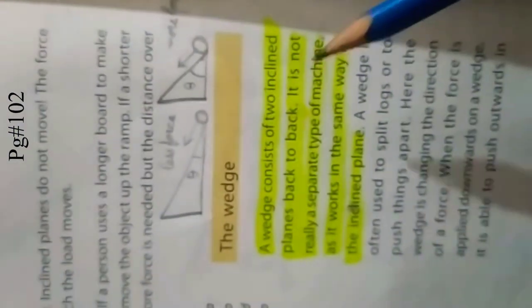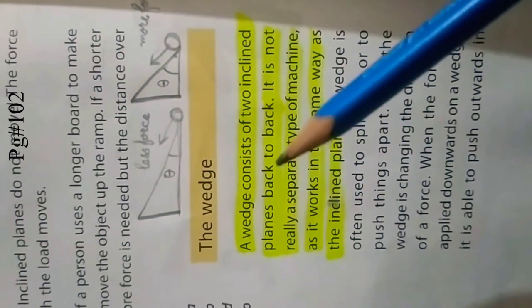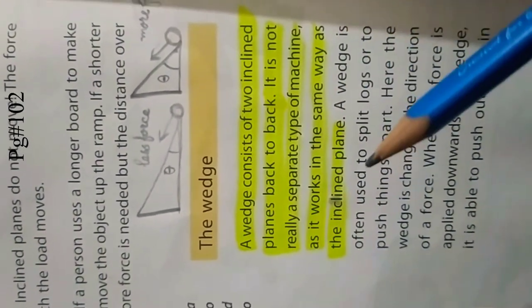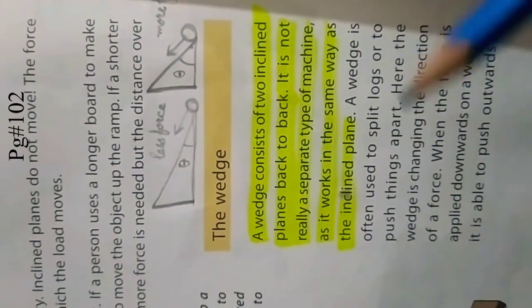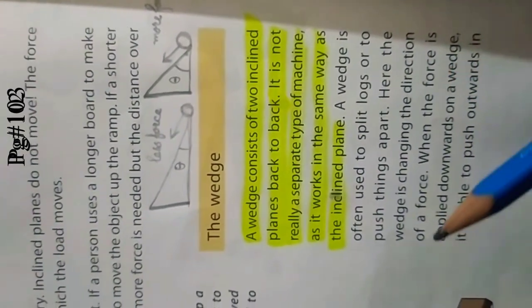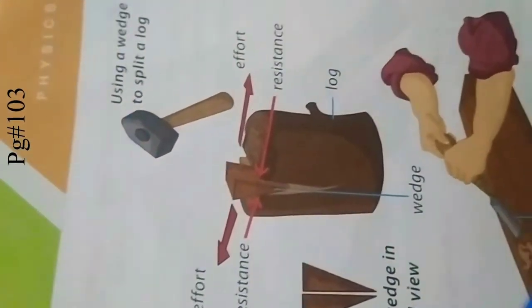This all has been told in this paragraph I have explained. Now we'll move to another simple machine that is wedge. A wedge consists of two inclined planes back-to-back. It works in the same way as inclined plane works. A wedge is often used to split locks or to push things apart. Here the wedge is changing the direction of a force. See, at this page they have explained very well the wedge.